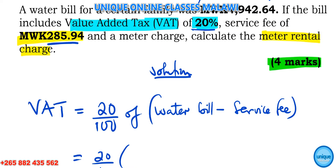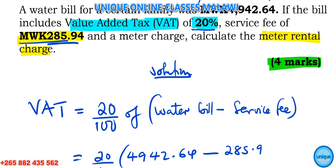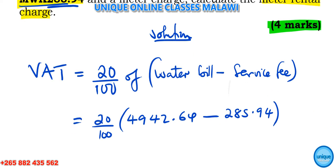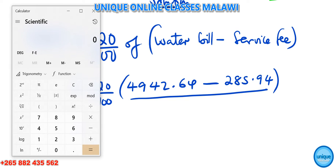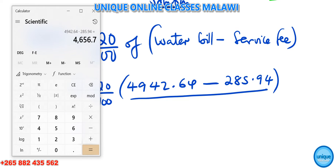So here we have 20% of the water bill from the question, which is 4,942.64 minus the service fee, which is 285.94. Now we have to find the difference of these two values. According to my calculator, 4,942.64 minus 285.94 gives us 4,656.70.